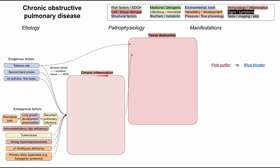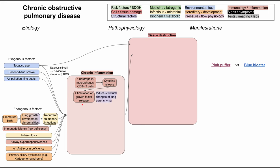Let's get into our chronic inflammation pathophysiology for COPD. It usually begins with some type of inflammatory cell, like neutrophils, macrophages, and CD8 T cells. When you have inflammation, these inflammatory cells are going to release cytokines. Cytokines do a lot of things in the inflammatory cascade — one of the things they do is stimulate the release of growth factors, which specifically induce structural changes in the lung parenchyma.